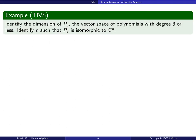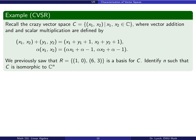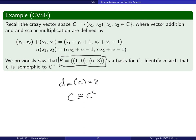Here's an example: identify n such that the vector space P₈ of polynomials of degree 8 or less is isomorphic to Cⁿ. Since the dimension of P₈ is 9, P₈ is isomorphic to C⁹. Another example: the 'crazy vector space.' The set r of vectors is linearly independent and spans that space, and it contains two vectors. So the crazy vector space has dimension 2 and is isomorphic to C².